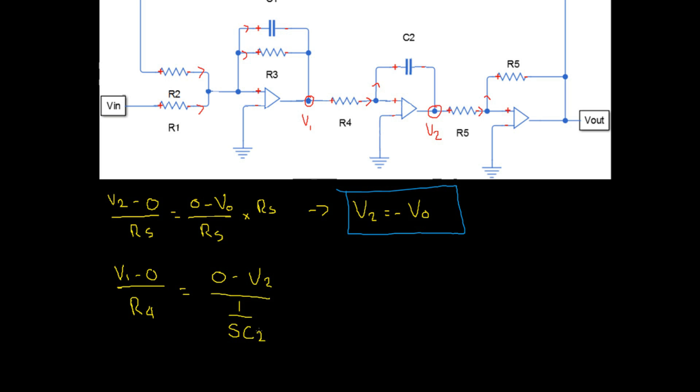Then, as we're dividing by a fraction, we can invert this and multiply, which gives us negative V2 SC2. Now, we can multiply through by R4 to remove the denominators, which gives us V1 equals negative V2 SC2 R4. And we have our second equation.